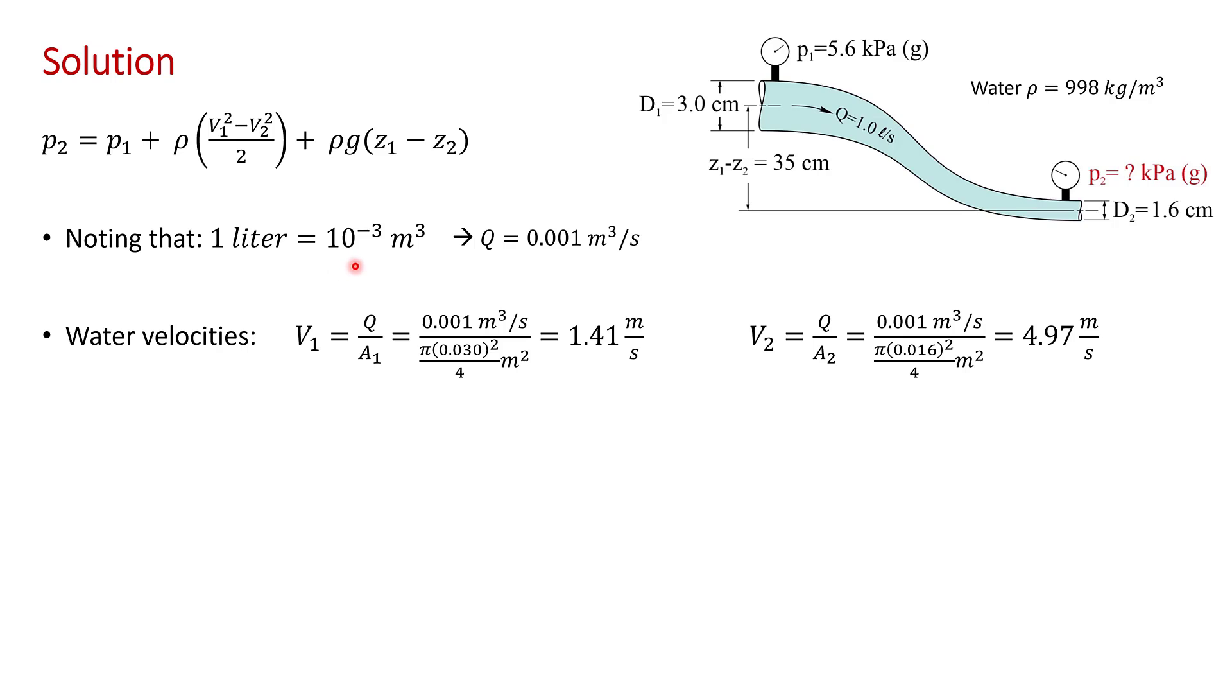so in other words, there's 1,000 liters in a cubic meter, we get that the volume flow rate is Q equals 0.001 cubic meters per second.